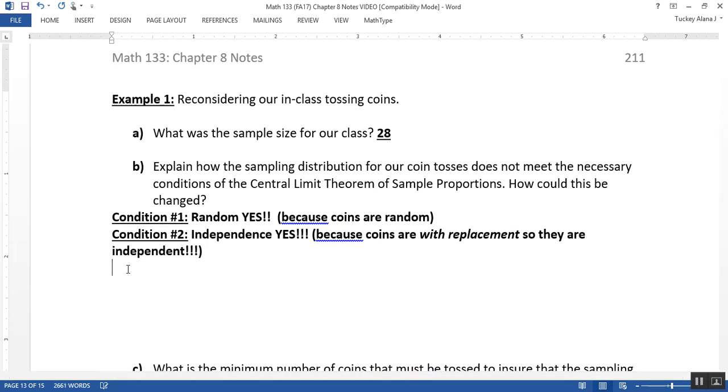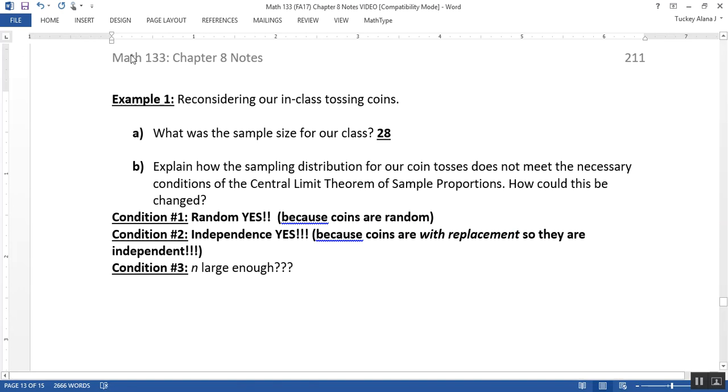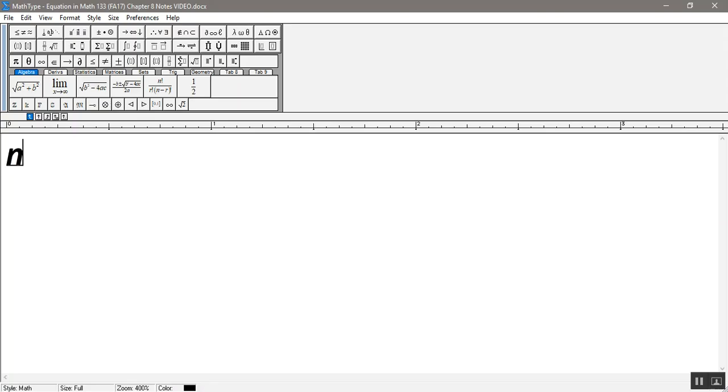Condition number three says that we have to have N times P times 1 minus P greater than or equal to 10. So we need N, our sample size, to be large enough, and this is where I think we're going to run into trouble. Now here's why. N times P times 1 minus P. Well, for us, that was 28 for our sample size, times P, which was 0.5.